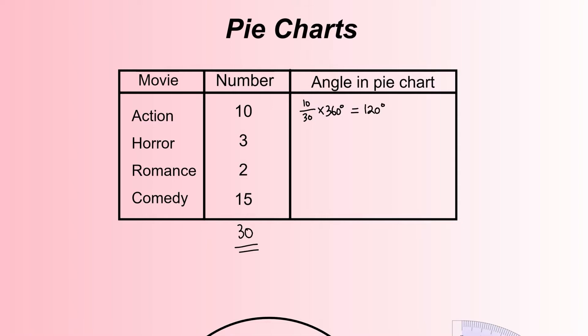We're going to go through the same process for Horror. Horror only had 3 out of 30 people pick it, so we'll multiply that by 360 and that would be 36 degrees—a smaller angle as you would expect. We could simplify that to one-tenth, and a tenth of 360 degrees would be 36 degrees.